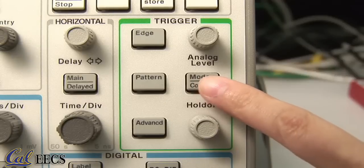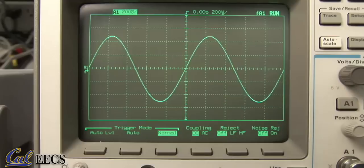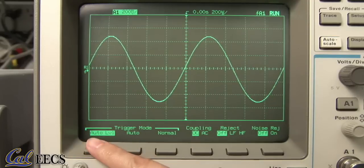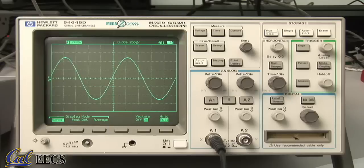There are also a number of trigger modes available. Normal mode produces a sweep only when the voltage on the selected channel crosses through the trigger point you have set, moving in the direction you have selected. In auto, the sweep will free run if no signal is present. In auto level, the level will go back to zero if no signal is present.